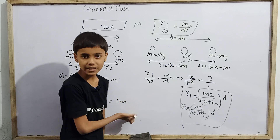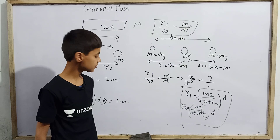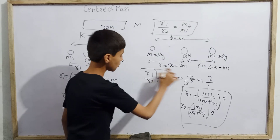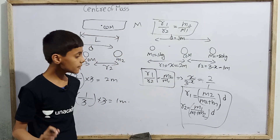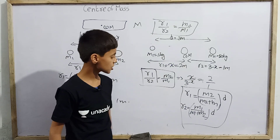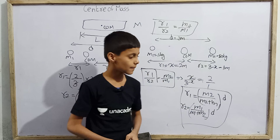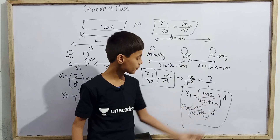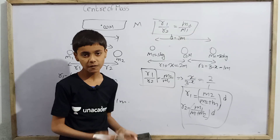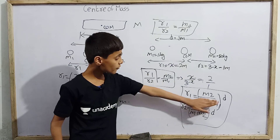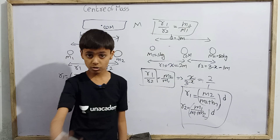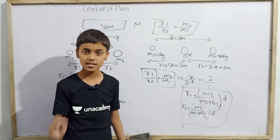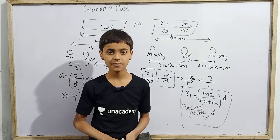For r2: r2 equals m1 by (m1 plus m2) times d. Substituting: m1 is 1, m1 plus m2 is 1 plus 2 equals 3, and d is 3. So r2 equals 1/3 times 3, the 3's cancel, giving r2 equals 1 meter. So r1 is 2 meters and r2 is 1 meter — the same answer. This concludes today's video on the position of center of mass in a system of two particles. Thank you.